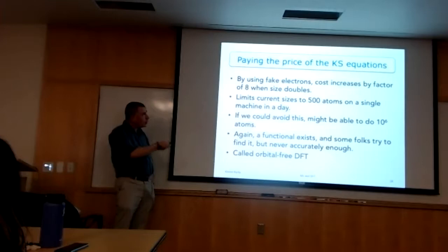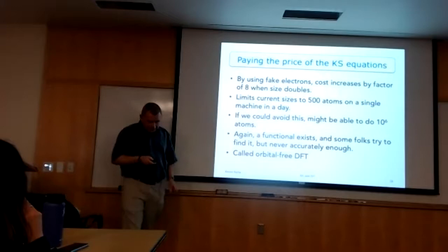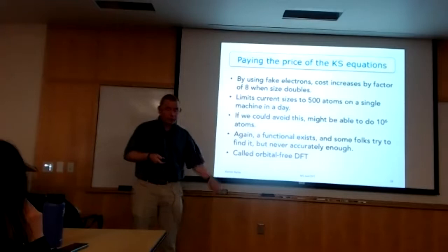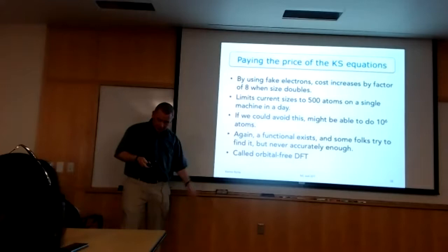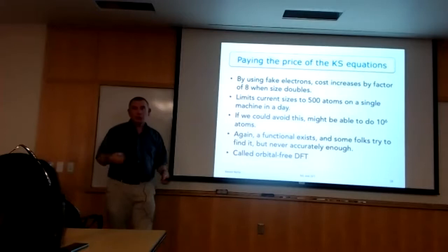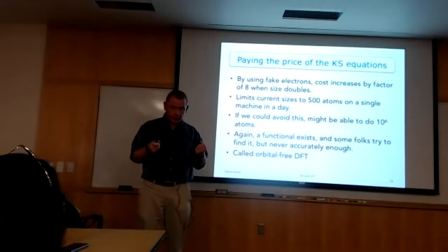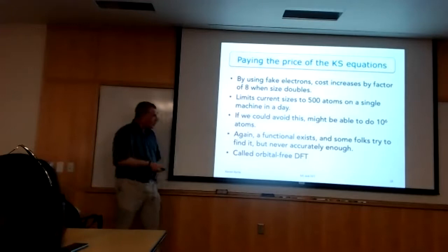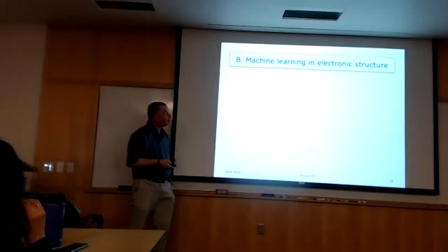One important point: you can do maybe 500 atoms quite comfortably on a single machine in a day, but the underlying theorems tell us there is also a density functional — called orbital-free DFT — which solves the Kohn-Sham equations directly without finding orbitals. If we could find this accurately enough, you could bypass solving them and maybe do a million atoms. There's a whole branch doing molecular dynamics with force fields, but many force fields don't account for breaking and making chemical bonds — that's why people do electronic structure, but with only 500 atoms you can only tackle a small sample.